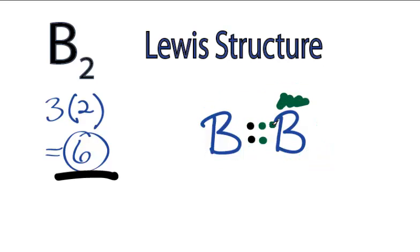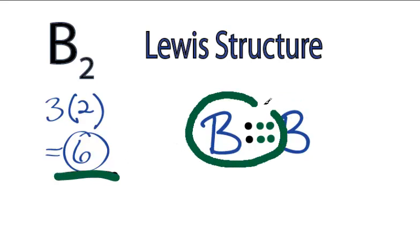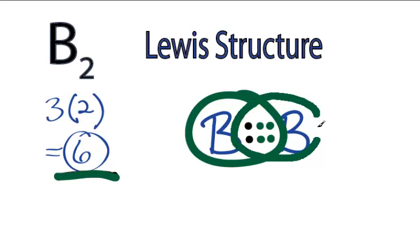Let's move another pair to the center and form a triple bond. So we've used all six valence electrons, but we still don't have an octet for either of the borons.